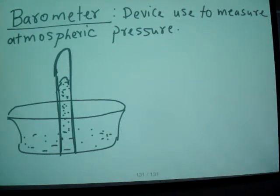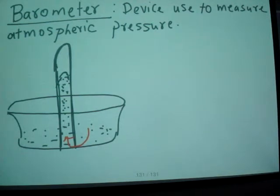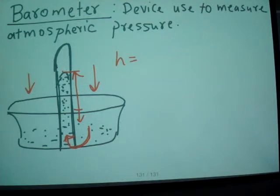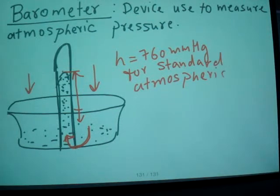So why does this fluid go from here to here? What do they do? Due to pressure. And what pressure? Since it's open to atmosphere, that atmospheric pressure presses this fluid inside and that's why it's raised. Right. So that height from here to here, that height is 760 millimeters of mercury and that is for standard atmospheric pressure.